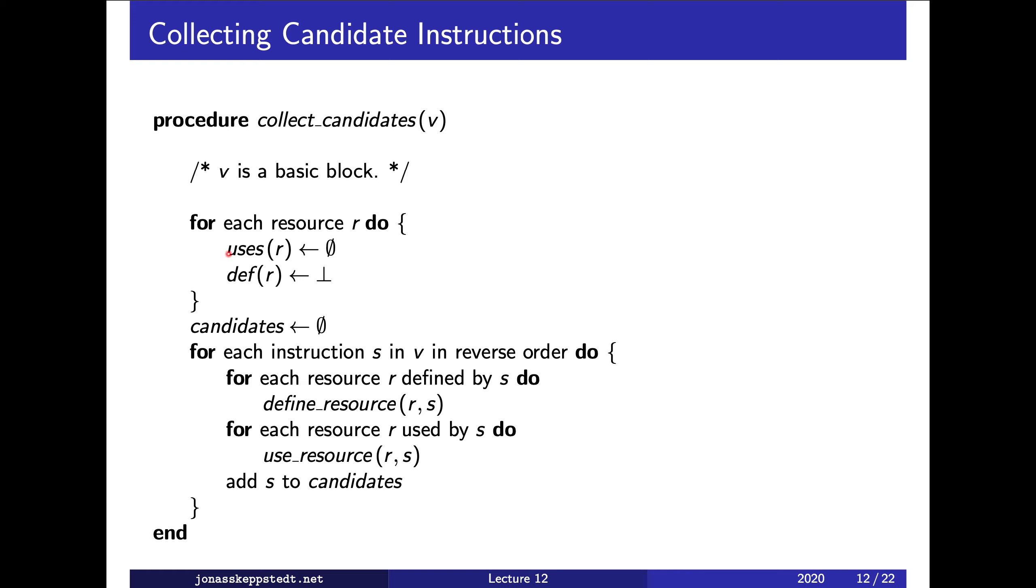So we initialize the resources and the candidate set, and then we scan the basic block in the reverse order. Then we do some operations when we define a resource by this instruction, and some other operations when we use the resource. And then we add s to the set of candidates. S can clearly be removed from this set by an earlier instruction that we will see in the future.